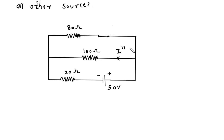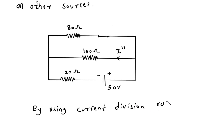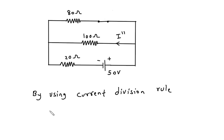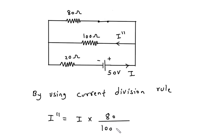This current will be I double prime. To find I double prime, we use the current division rule again. I double prime is equal to total current I into the opposite branch resistance, that is 80 ohm, divided by 80 plus 100. First we have to find this current I in the circuit.